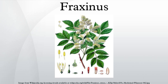The European ash, Fraxinus excelsior, has been affected by the fungus Hymenoscyphus fraxineus, causing ash dieback in a large number of trees since the mid-1990s, particularly in Eastern and Northern Europe. The disease has infected about 90% of Denmark's ash trees. At the end of October 2012, the UK's Food and Environment Research Agency reported that ash dieback had been discovered in mature woodland in Suffolk; previous occurrences had been on young trees imported from Europe.